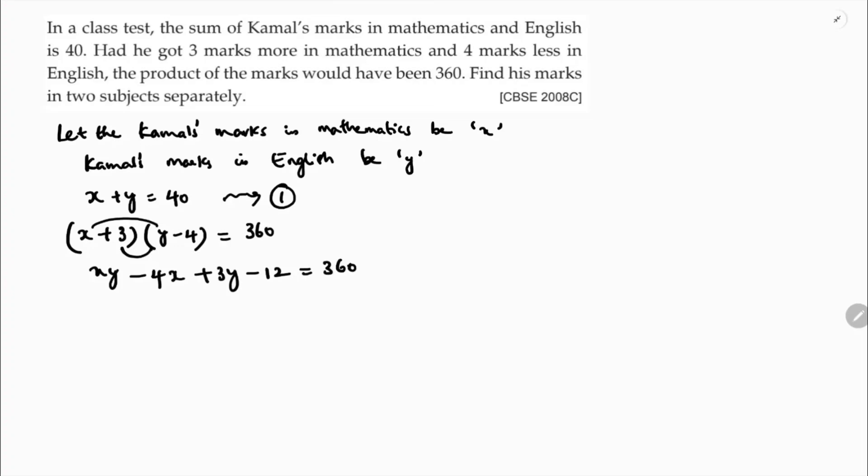Before multiplying, just substitute the value from equation 1. From equation 1, you can write y equals 40 minus x. So (x + 3) into (40 minus x minus 4), which is (x + 3)(36 minus x) equals 360.